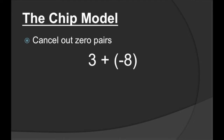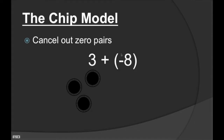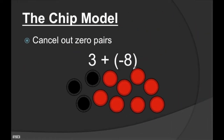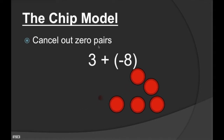So let's try canceling out with zero pairs when we're adding three plus negative eight. Positive three is going to be three black chips, and negative eight is going to be eight red chips. Now we have to cancel out any zero pairs we have. We're going to cancel out one, two, three — and we're left with five red. So our answer is negative five.